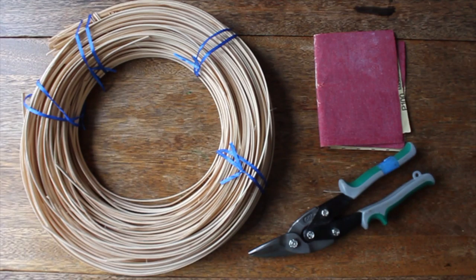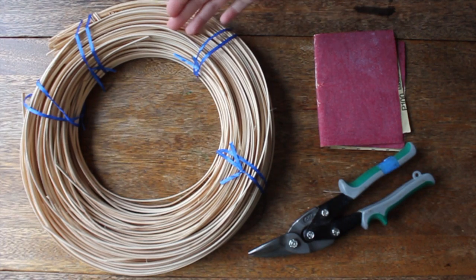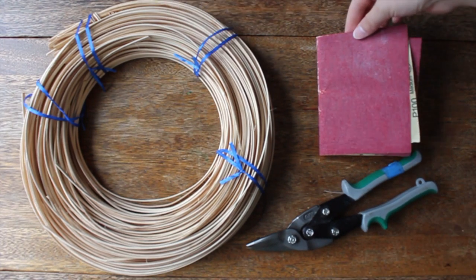I used reed, or caning, for my stays. These were cut with the aid of tin snips and craft scissors, and the rough ends of each reed were smoothed with some sandpaper.